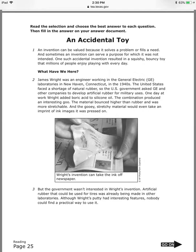We're going to be reading the passage 'An Accidental Toy' — this is for 5th grade. Remember, as you're reading, try to get the main idea, underline keywords, you can draw pictures in the margin, and find words in the dictionary if you need to clarify the meaning. Enjoy the passage.